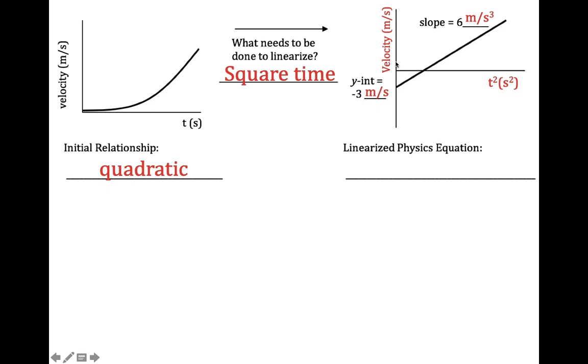So our physics equation is going to be the y variable is equal to the slope times the x variable plus the y-intercept. So y variable velocity is equal to the slope including units times the x variable which is time squared plus the y-intercept which is negative three meters per second. So there's the first example.